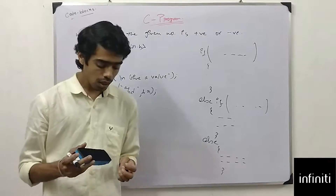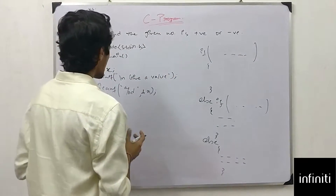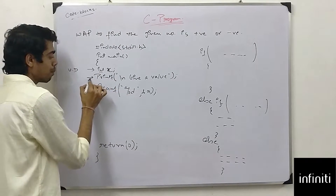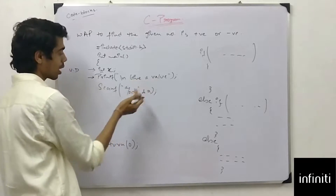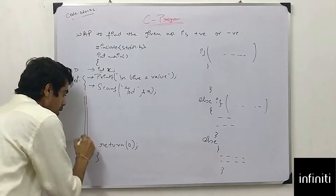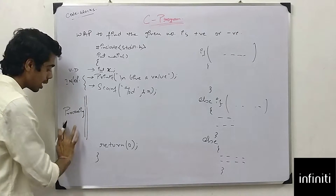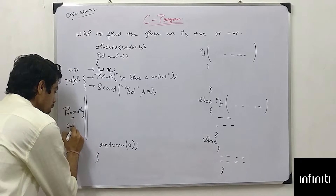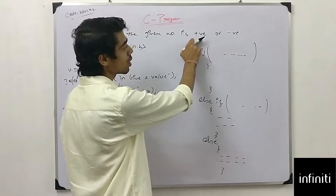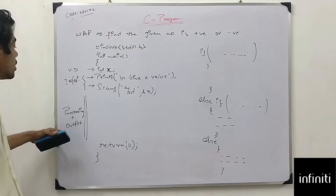We will find whether the given number is positive or negative using the if-else condition. I have taken a variable x of integer type. I have given a print statement to ask for a value, and a scanner to scan the input. I have left the processing part for now. The output section depends on the processing part — if the number is positive, we get one output; if negative, we get another.